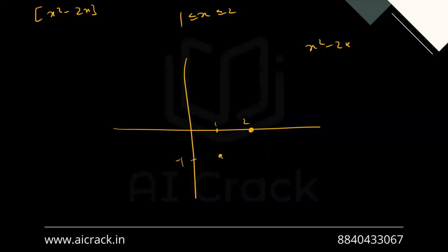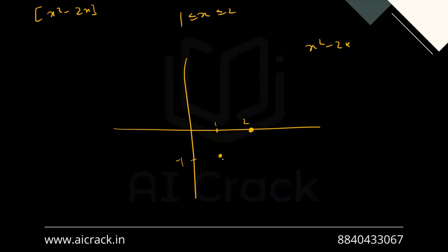The question is whether the parabola dips further below -1 before going up, or goes straight up from x = 1. For a quadratic ax² + bx + c, the minimum occurs at x = -b/2a. Here x = 1 is exactly that minimum point — it's the left endpoint — so the function goes directly upward from x = 1 without dipping further.